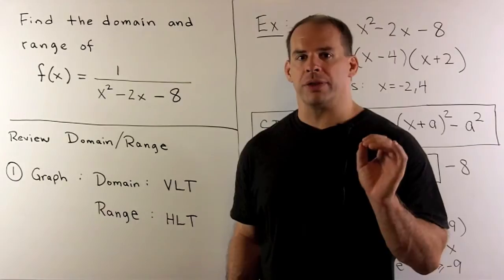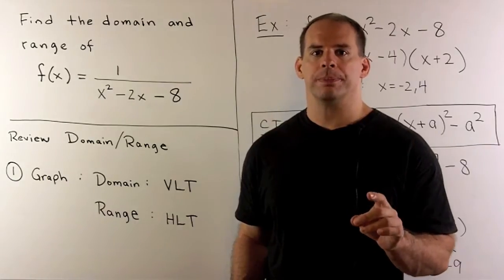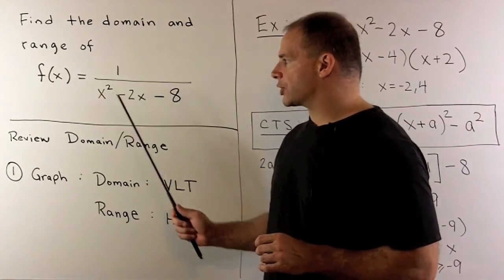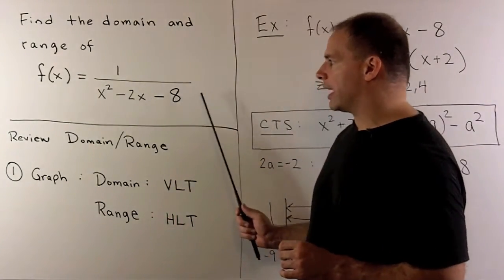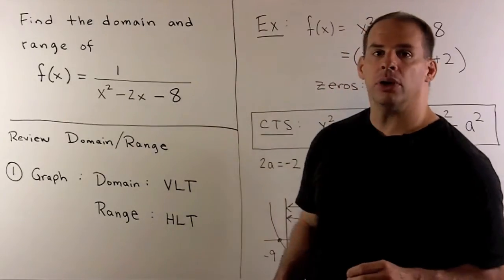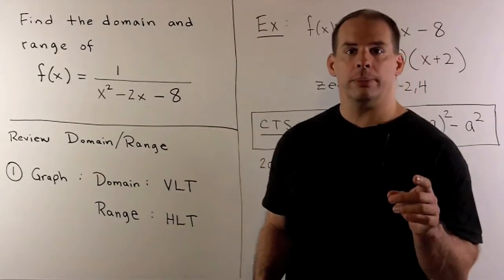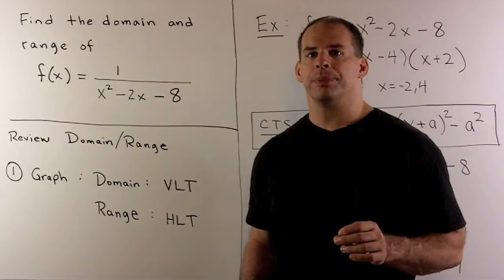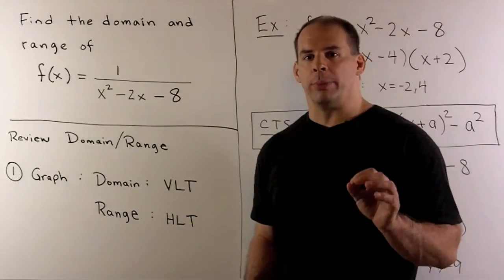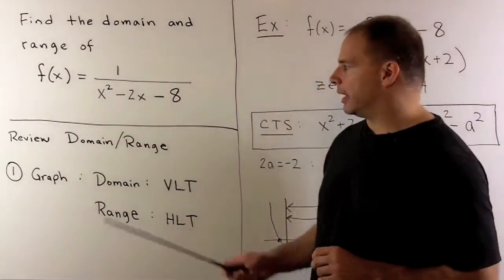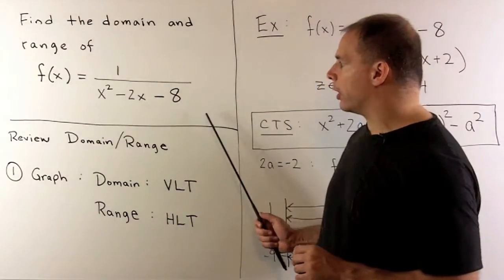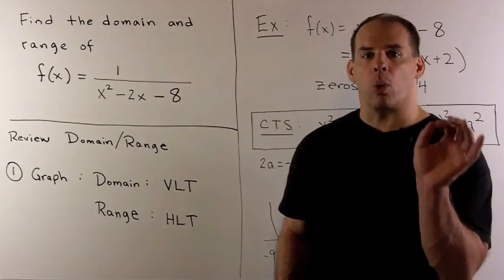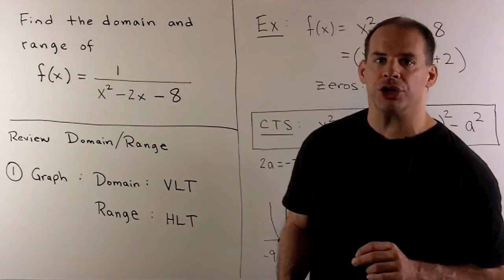Let's find the domain and range of the function f(x) = 1/(x² - 2x - 8). We note that since f(x) is a rational function, the domain will be all x except where the denominator is equal to 0. That means our main work is going to be in finding the range.